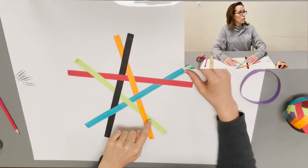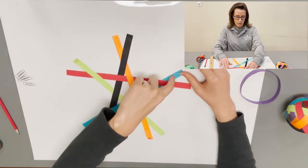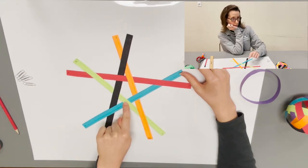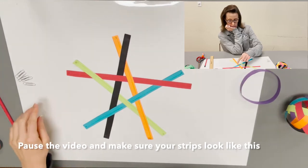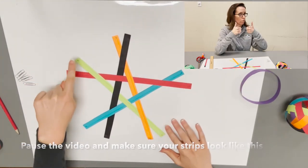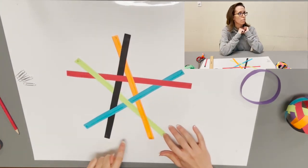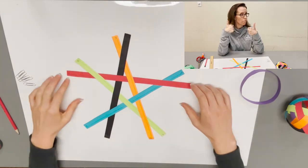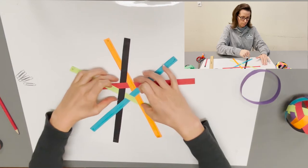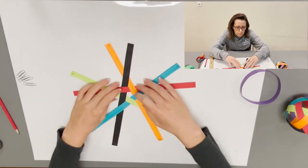Black goes under the teal, over the green, under the red, and over the orange. Orange goes over green, under teal, over red, under black. As you go around you should have number two, number five, number three, number one, number four repeating.